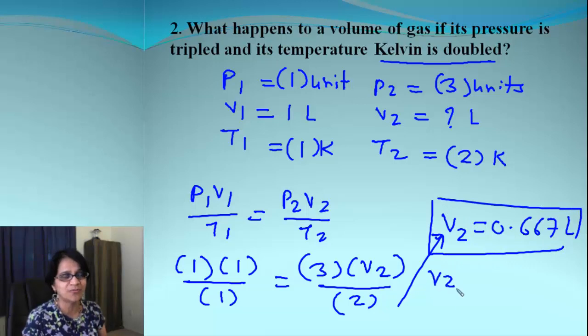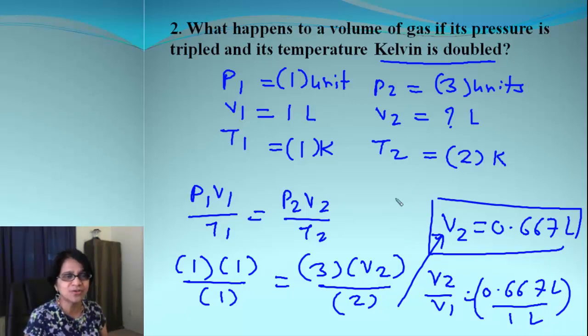So we can also write that in the format of V2 by V1 is 0.667 divided by 1, so we got a ratio. Or we can also write that as V2 is 0.667 times V1. So we can express the answer in any format which we like to explain.